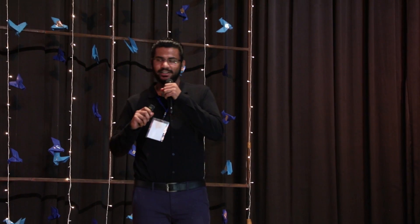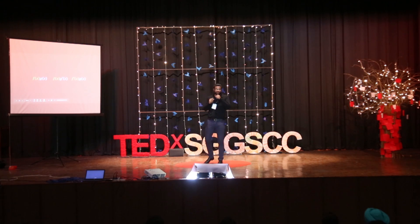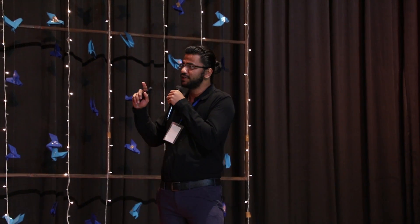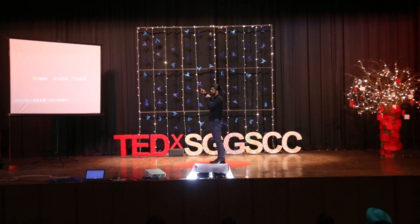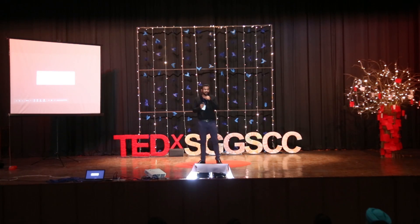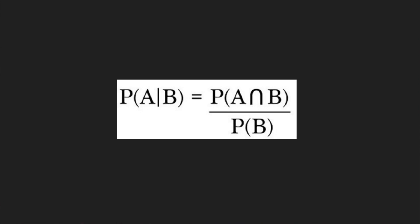Good morning everyone. This is the equation of sigmoid: 1 upon 1 plus e to the power of minus z. This is the differentiation equation you studied in class 10th — differentiation of functions f(x)g(x) equals f(x) times g'(x) plus f'(x) times g(x). And this is the probability equation: probability of A given B equals probability of A and B upon probability of B.